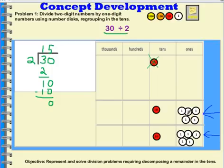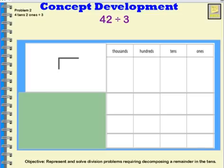So thirty divided by two is fifteen. And we showed it in two ways. One way was the place value chart, and the other way was the standard algorithm, or the long division algorithm. Alright, let's try this one.